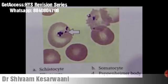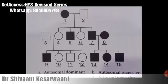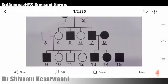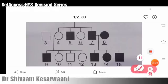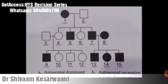Now coming to the important part — pedigree analysis. This is one part neglected by many students. You can divide pedigrees into autosomal dominant, autosomal recessive, X-linked dominant, and X-linked recessive. First, see whether it is linked to the X chromosome by checking for gender predisposition. Here the mother is transmitting to males in the first generation — this indicates an X-linked pattern.